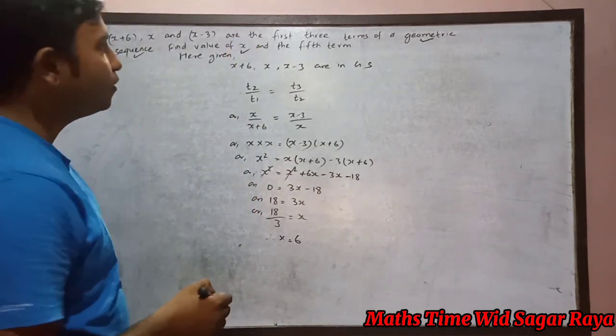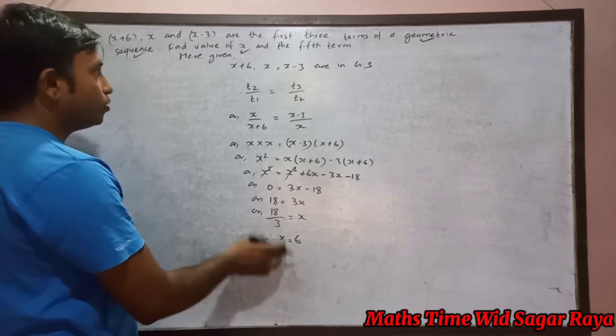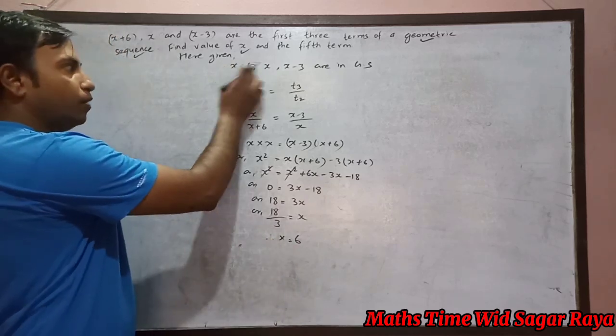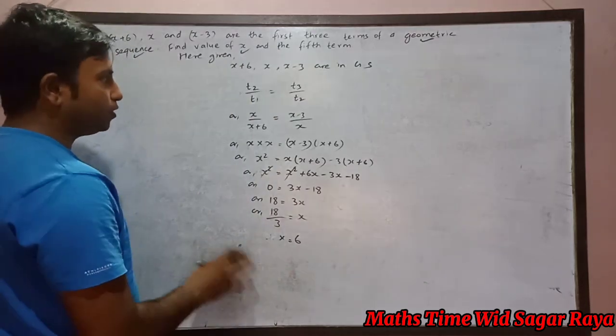Now we got the value of x. Now we have to find the fifth term. In order to find the fifth term, first of all we have to find the first term and second term.